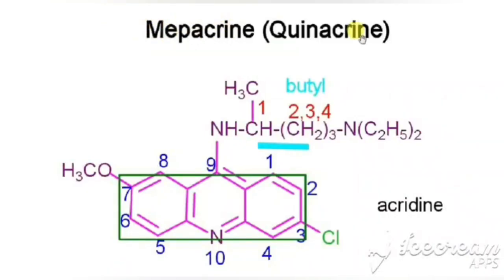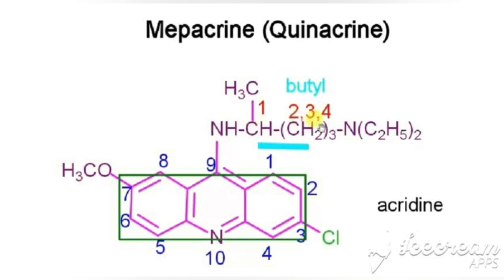The next drug is mepacrine, otherwise called quinacrine. It comes under 9-aminoacridines. Acridine has a pyridine ring fused at both ends with benzene rings. In mepacrine, the 9th portion of acridine has an amino group connected to a butyl chain — 1st carbon has a methyl, 4th carbon has a diethylamino group. The 7th carbon has a methoxy group and the 3rd carbon has a chloro group.